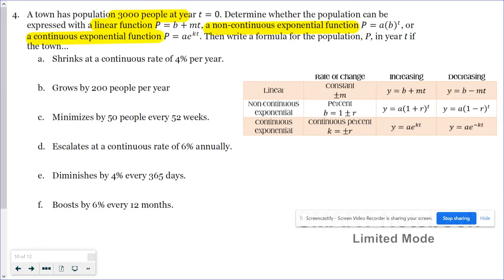I'm going to tell you how we're going to know for sure which one. Linear functions have a constant rate of change. Exponential functions have a percent rate of change. Our non-continuous exponential will be a simple percent. Our continuous exponential will be a continuous percent, like they will actually use the word continuous.